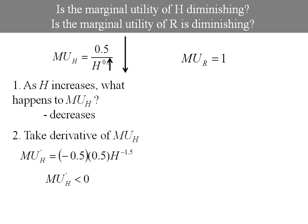Let's do the same thing for good R. We know that its marginal utility is 1. So as R increases, we see that the marginal utility with respect to R is actually constant, so it is not diminishing. If you took the first derivative, you'd get 0, reminding you, oh yes, it's a constant.